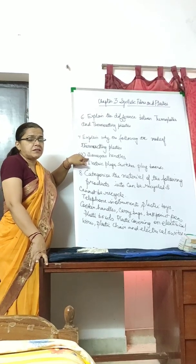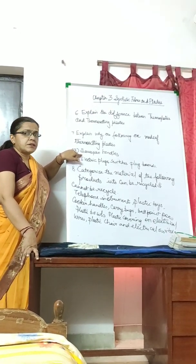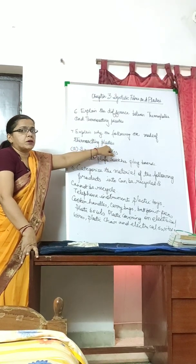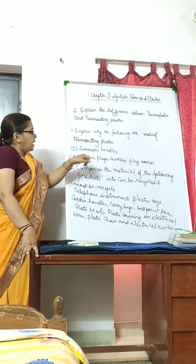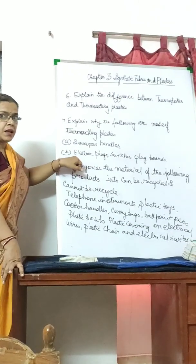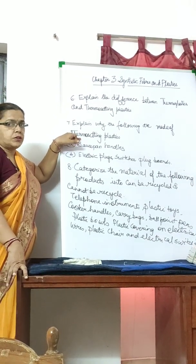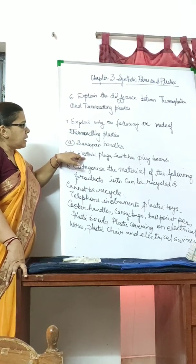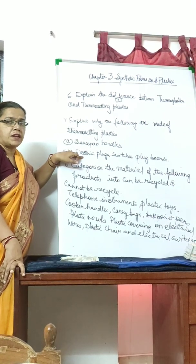Saucepan handles and utensil handles are made of thermosetting plastics because they are poor conductors of heat. Another example is electric plugs, switches, and plug boards — materials like bakelite are used because thermosetting plastic is a poor conductor of electricity.